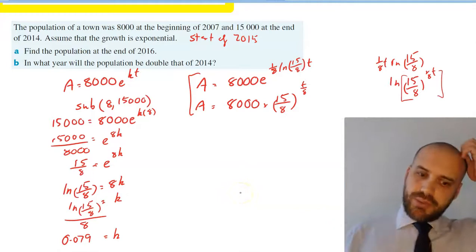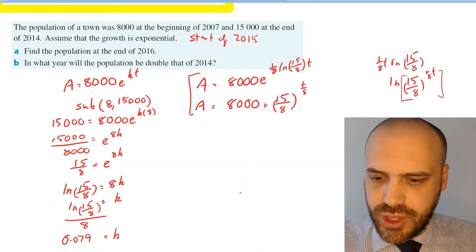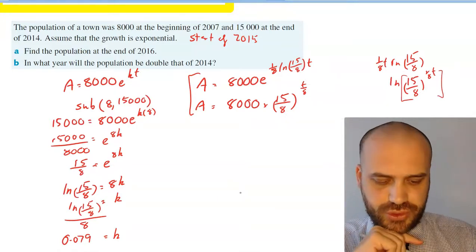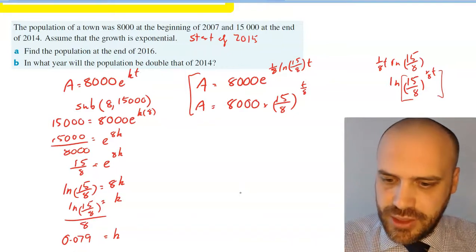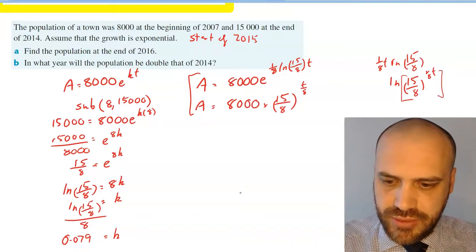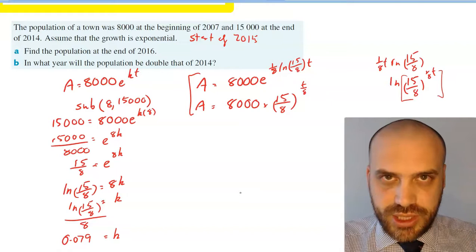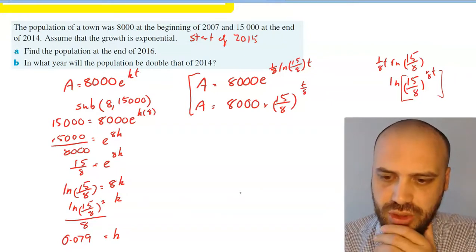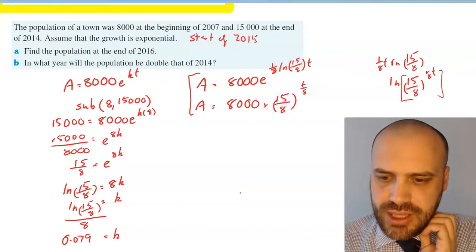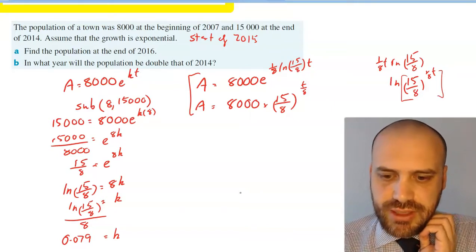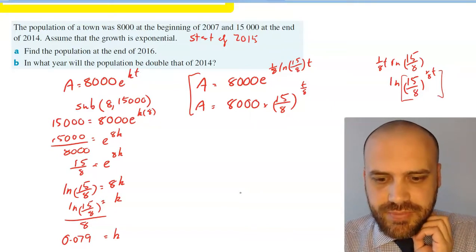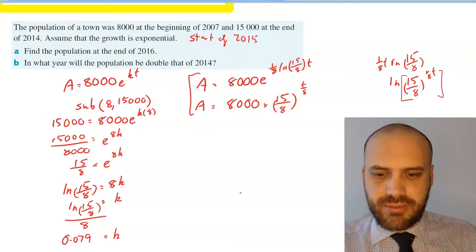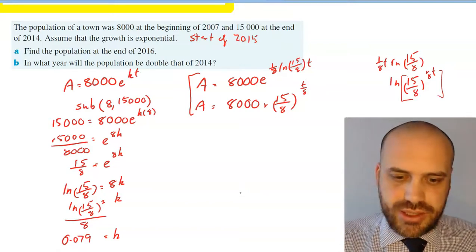So we haven't even got to the bit where we're supposed to answer these questions. Find the population at the end of 2016. Alright, so at the end of 2014, start of 2015, that was time 8, which means the end of 2016 must be time 10. So all we need to do is sub in t equals 10 into this equation.